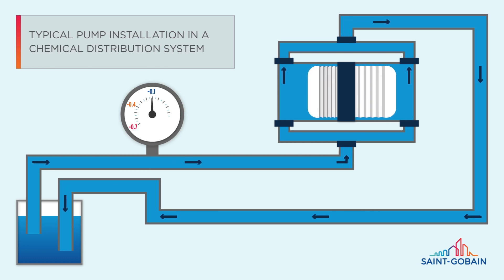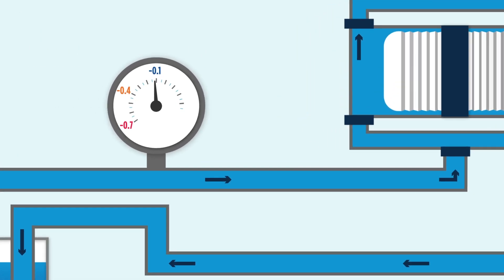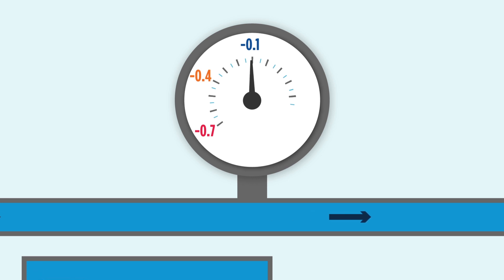This represents a typical recirculation loop installation found in a chemical distribution system. The bellow pump is operating normally in this installation. Note the normal working pressure is negative 0.1 bar.